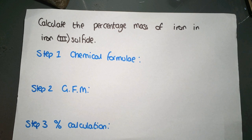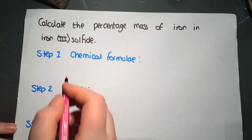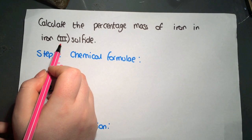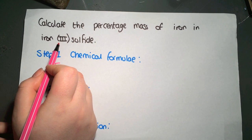The first step is to write the chemical formula. So we find the symbol for iron is Fe, and the valency is written in brackets here, so it's Roman numeral 3.